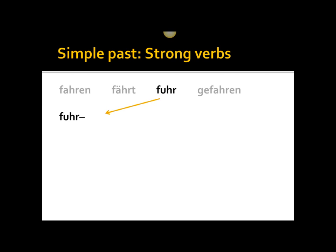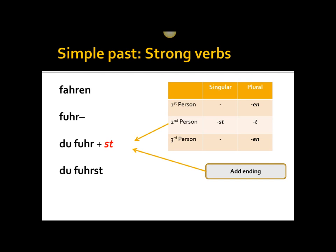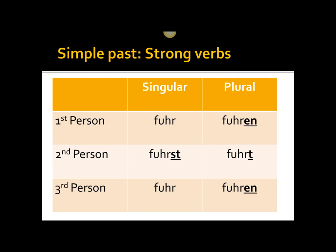We take fuhr as the simple past stem. Unlike irregular verbs and weak verbs, where we have to add a simple past tense marker — a TE construction — we don't have that with strong verbs. We simply take the simple past stem and run it through the conjugation pattern. Here is a zoom in on the simple past of fahren: ich fuhr, du fuhrst, er/sie/es fuhr, wir fuhren, ihr fuhrt, sie fuhren.